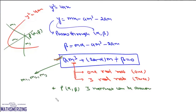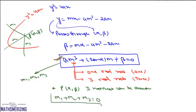Now we'll write the sum of roots, which is m1 + m2 + m3. In this case, there is no m² term, so it will simply be zero. So if from a point three normals are drawn to a parabola, then the sum of slopes of these normals should be zero.